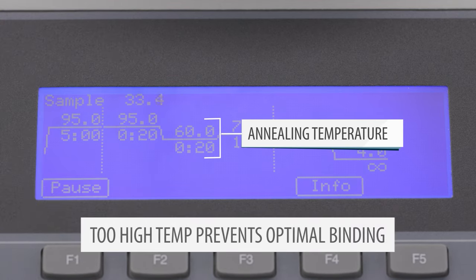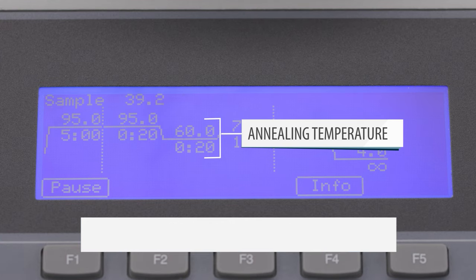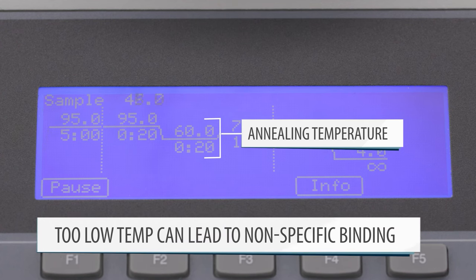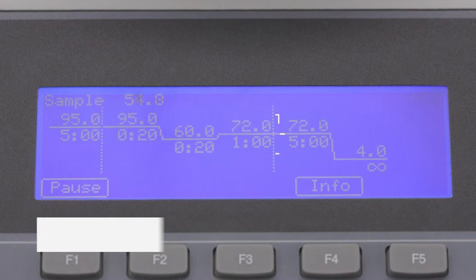Too high of an annealing temperature prevents optimal binding of the primers to the templates, while a temperature that is too low can lead to nonspecific binding and subsequently nonspecific PCR products.